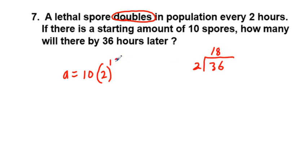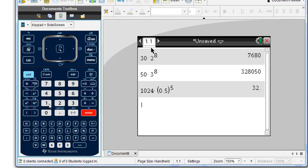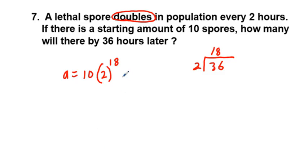So we get 10 times 2 to the 18th power. That is probably going to be a lot. So we go to our calculator and put in 10 times 2 to the power of 18, and we get 2,621,440.